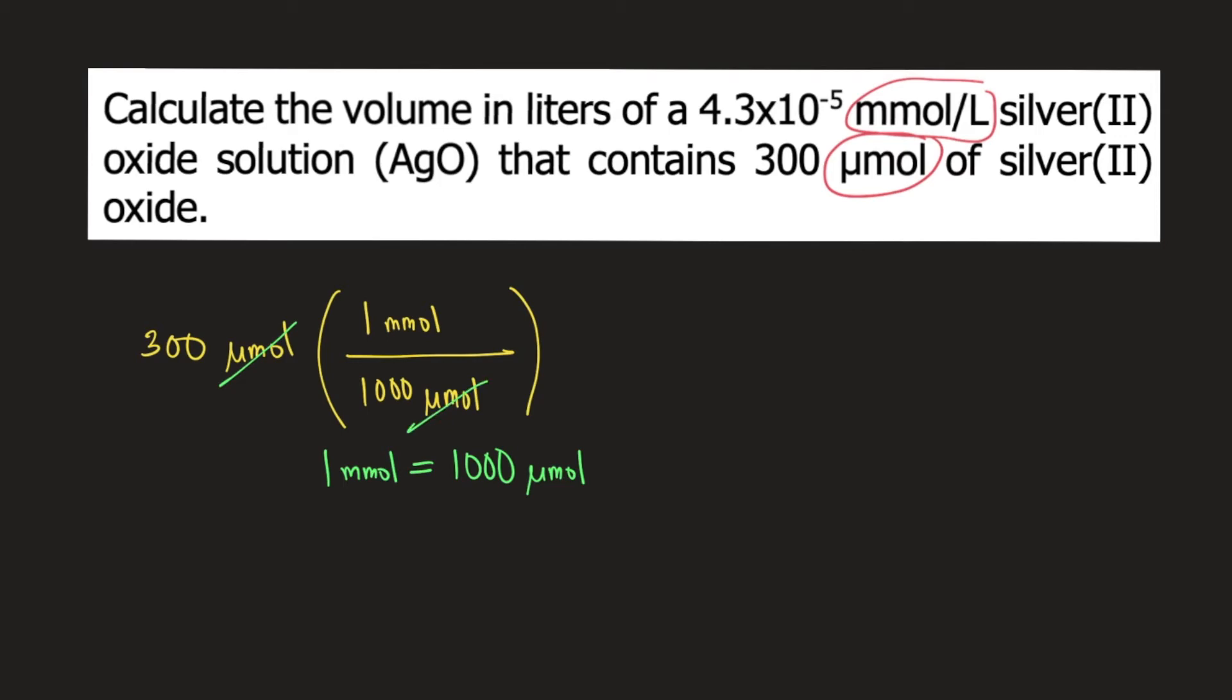And in the problem, we are given the concentration of silver(II) oxide which is 4.3 times 10 raised to negative 5 millimoles per liter. So we put this into our conversion. You put 4.3 times 10 raised to negative 5 millimoles at the bottom and on the top you put 1 liter. So that millimoles will cancel. Now you have your final unit which is liters.